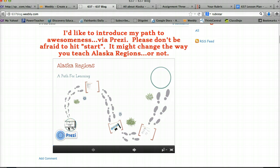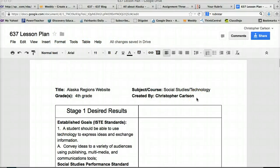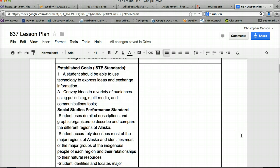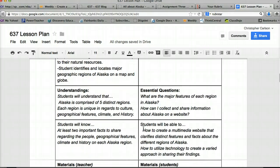But I have down here, it's very difficult to see, but when you click on it, it pops open full screen. I have my rubrics here, my lesson plans, a couple of other tutorials on how to pull this off. Okay, so this is my lesson plan. It's basically built around social studies and technology. I have some established goals, some ISTE standards. A student should be able to use technology to express ideas and exchange information. Convey ideas to a variety of audiences using publishing, multimedia, and communication tools. Social studies performance standards are pretty much everything Alaska. Alaska regions this, Alaska regions that. And I also used a backwards design lesson plan to pull this off.